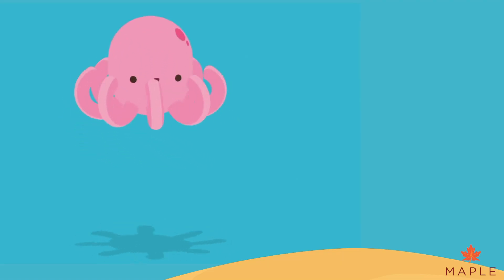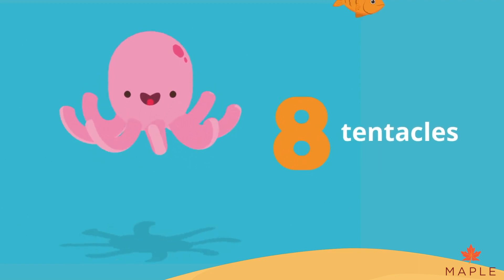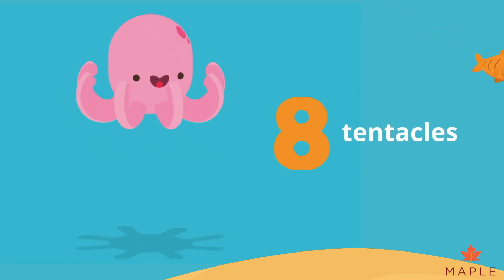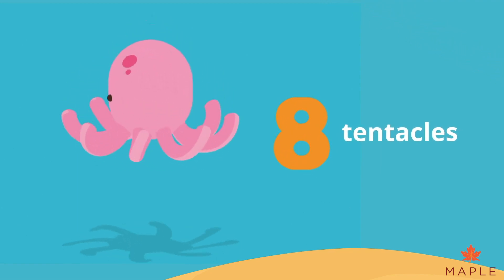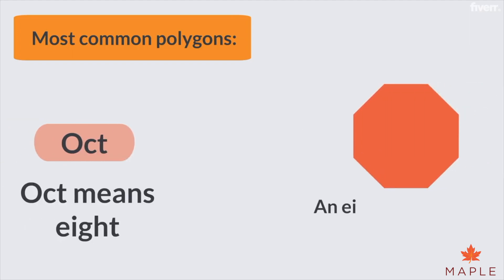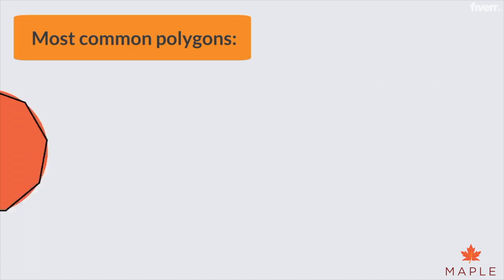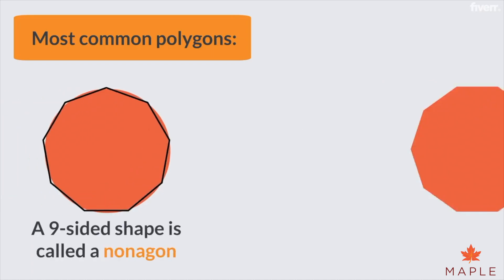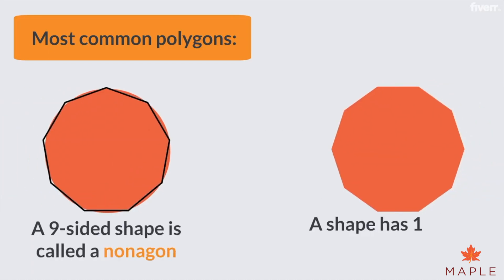We all know octopuses are soft-bodied, eight-limbed mollusks — 'oct' means eight, so an eight-sided shape is an octagon. A nine-sided shape is called a nonagon, and if a shape has ten sides, it is called a decagon.